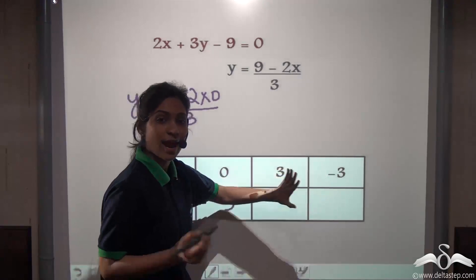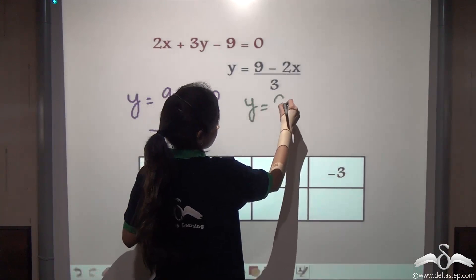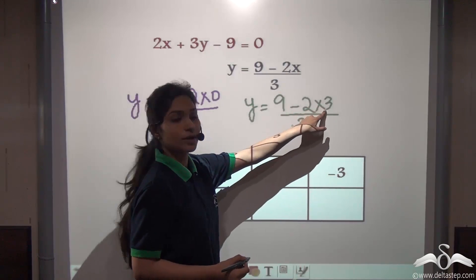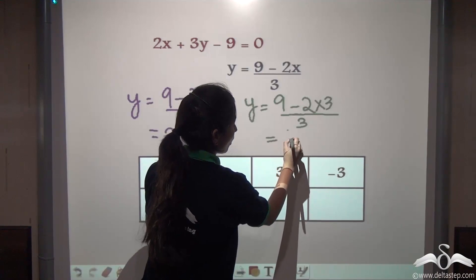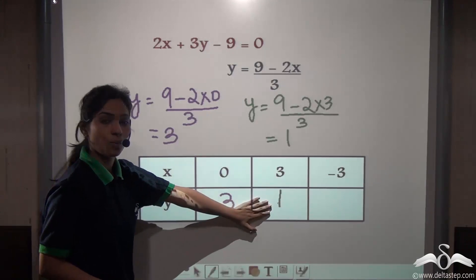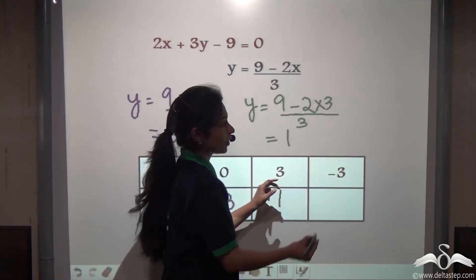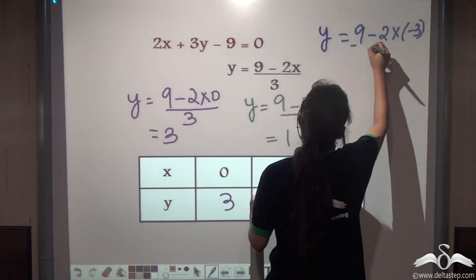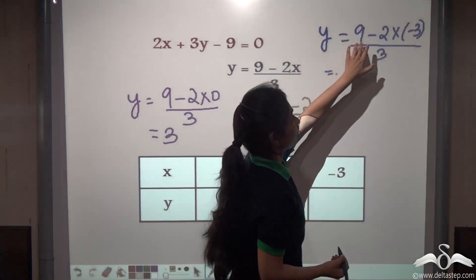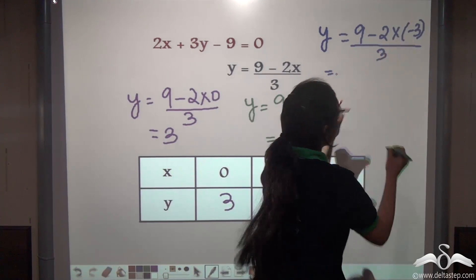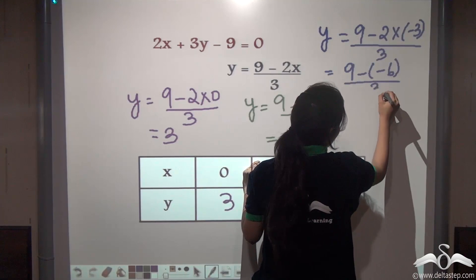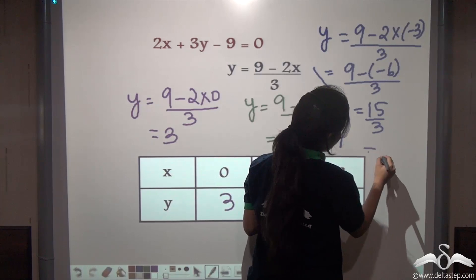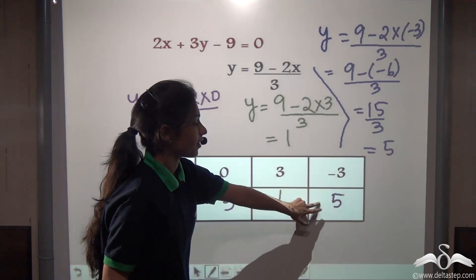Similarly, put x = 3: we get (9 minus 2 into 3) by 3, so 2 into 3 is 6, 9 minus 6 is 3, and 3 by 3 gives 1. So when x is 3, y is 1. When x is minus 3: we get (9 minus 2 into minus 3) by 3. Now 2 into minus 3 gives minus 6, so 9 minus minus 6 is 9 plus 6, that is 15 by 3, which is 5. So when x is minus 3, y is 5.